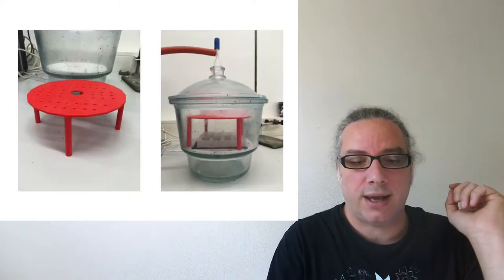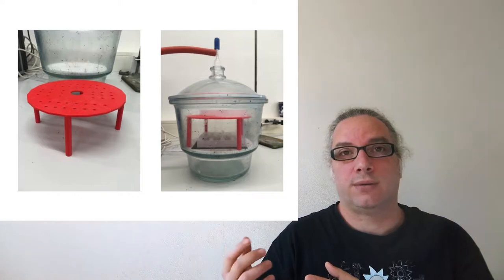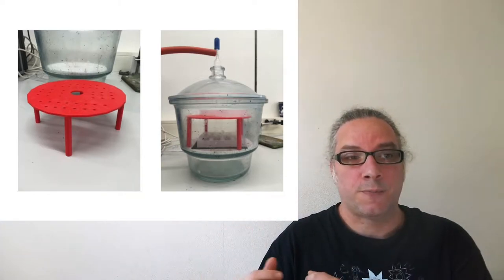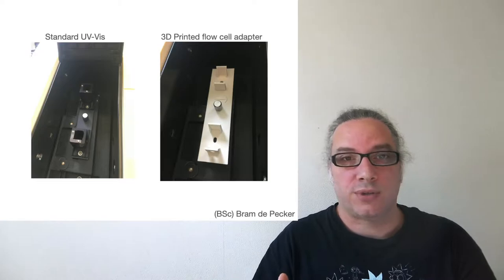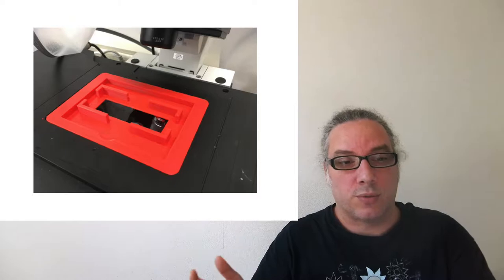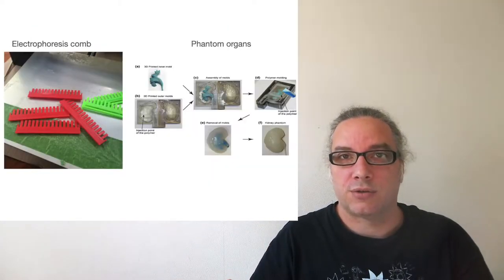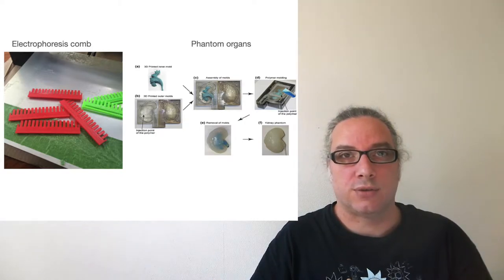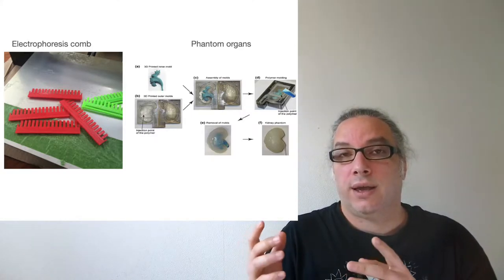Even if you don't want to use them for anything super fancy, they are super useful for making things in the lab. For example, you can have an extra plate in the desiccator, you can modify your UVVs, you can make your UVVs with a flow cell just by 3D printing a part. You can modify parts of your microscope. If you can design it, you can 3D print it and modify anything you want in the lab — also for very simple things like electrophoresis combs, which can cost more than 10 euros but if you print them they cost just a few cents. You can also use it for making phantom organs.